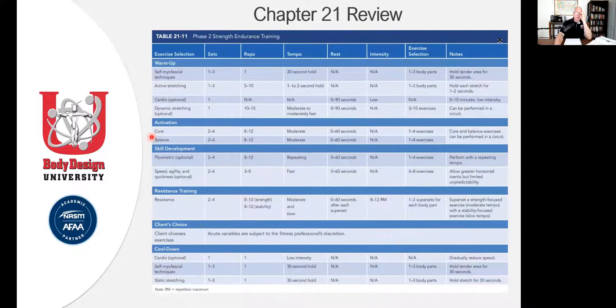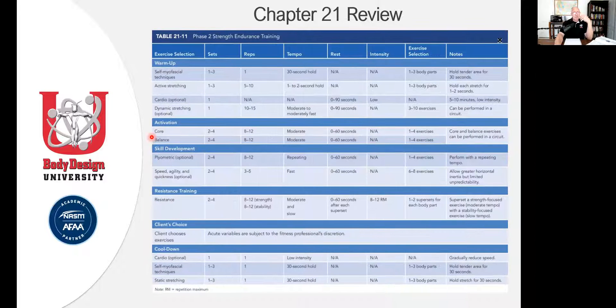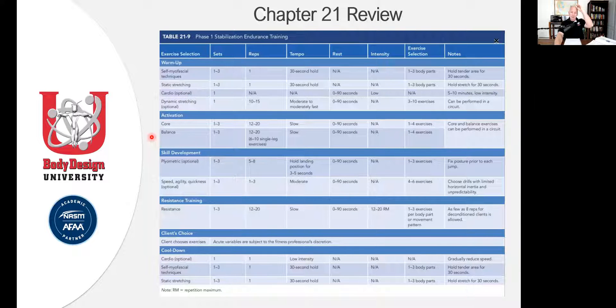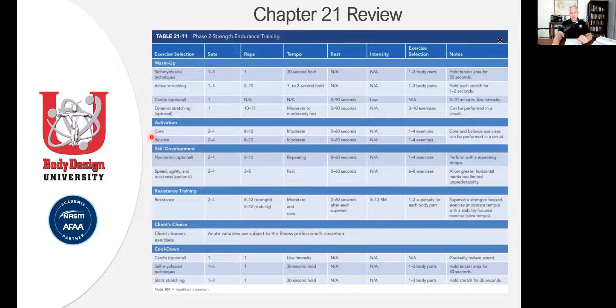So look what I did for you. I just kind of threw these up. This is phase one, this is table 21.9. These are your acute variable tables. So phase two, phase three, four, and five. All I did was cut and paste them. So you can look at them, they're in your textbook. So as you're reading through the textbook, you're going to hone in and focus on each one of these particular tables.